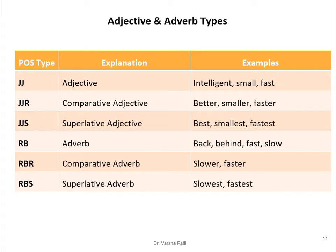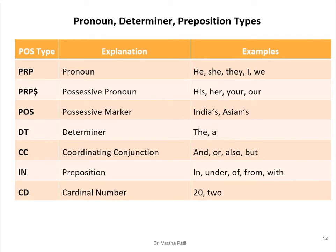For adjective and adverb types: JJ is adjective (e.g., intelligent, small, fast); JJR is comparative adjective (e.g., better, smaller, faster); JJS is superlative adjective (e.g., best, smallest, fastest). Similarly for adverbs: RB is adverb (e.g., back, behind, fast, slow); RBR is comparative adverb (e.g., slower, faster); RBS is superlative adverb (e.g., slowest, fastest).